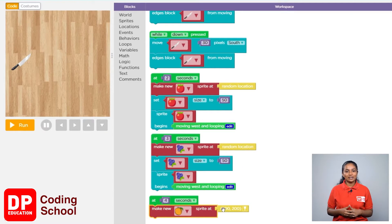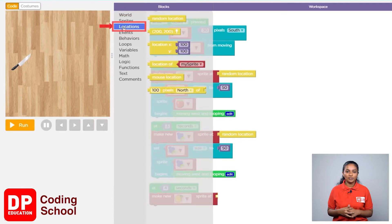Now delete the yellow color location block in front of the make new sprite at block. I will click on locations. Now drag the random location block like this.